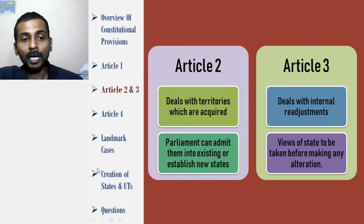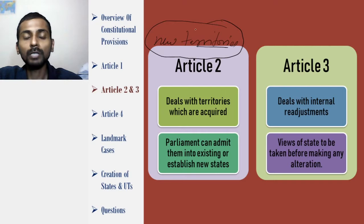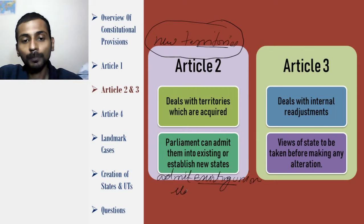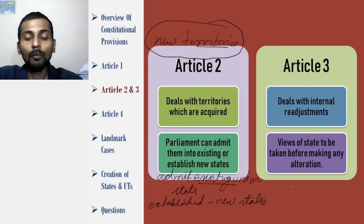Coming to Article 2 — as already mentioned, Article 2 deals with new territories and gives power to the parliament to make laws for the inclusion of these new territories in India. It further says that these new territories can be added to India in two methods: first, admit to the existing union — meaning this new territory can be added to any of the existing states of India — and second, this new territory can be established as a new state itself.